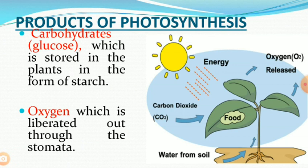The products of photosynthesis: there are two main products. One is carbohydrate, which is stored in the plants in the form of starch. The second is oxygen, which comes out through stomata and is used by all living organisms for respiration, including plants.